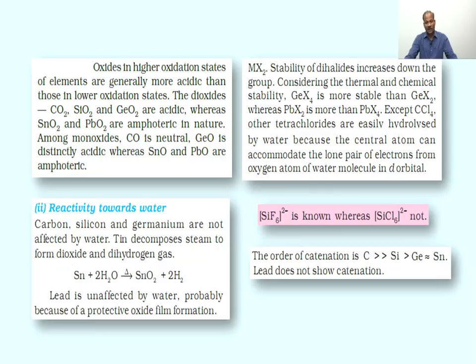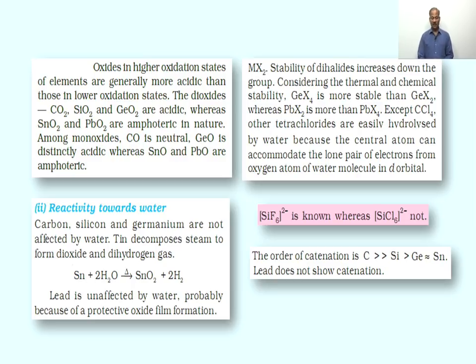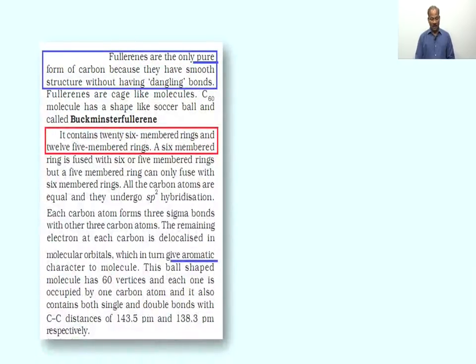The order of catenation in Group 14 elements is an important property. Maximum tendency of catenation is shown by carbon. The order is: carbon >> silicon > germanium ≈ tin (negligible), and lead does not show catenation at all.